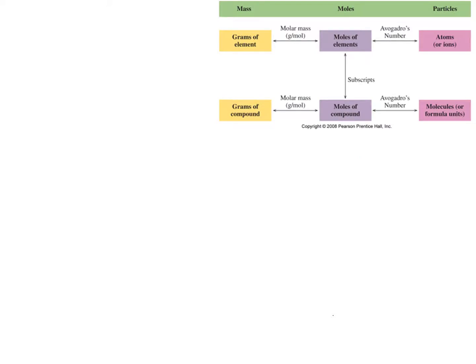To get the grams of carbon from grams of CO2, we use our roadmap. We start with grams of the compound, go through molar mass to get moles of the compound, then use the subscript conversion factor to get moles of the element, and then molar mass again to get grams of the element. We'll do that for both CO2 to grams of carbon, and grams of water to grams of hydrogen — the same process we've practiced in class.